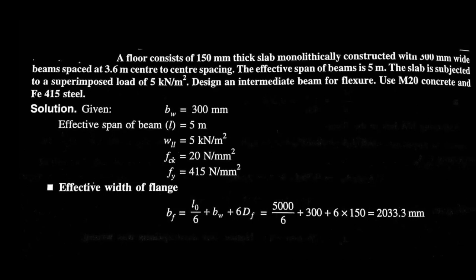A floor consists of 150 mm thick slab monolithically constructed with 300 mm wide beams spaced at 3.6 meter center to center spacing. The effective span of beams is 5 meter. The slab is subjected to superimposed load of 5 kN per meter square. Now design an intermediate beam for flexure. Use M20 concrete and Fe415 steel.